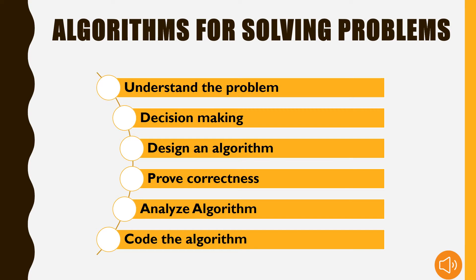After understanding the problem, we come towards decision making. In decision making, we take problem-related decisions and figure out which category of solutions to take and what the best solution is. Then, design the algorithm — algorithm is step by step. It is the procedure we have to take from start to end, and we have to take all the steps.